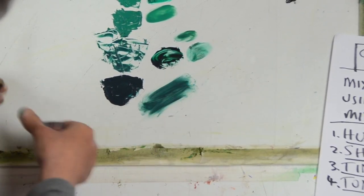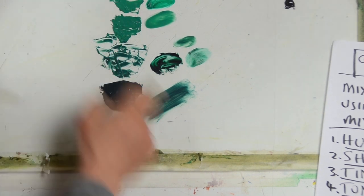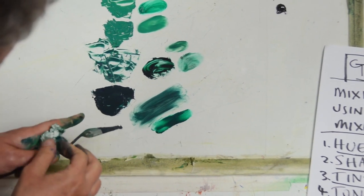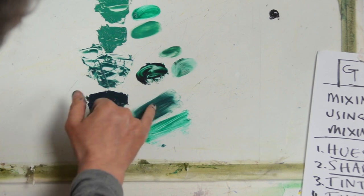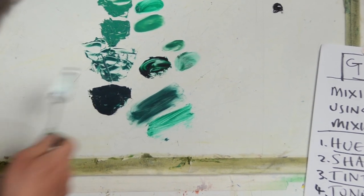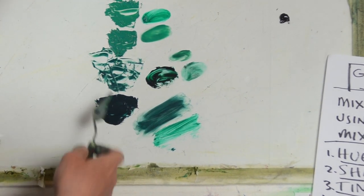You can see the difference in the intensity of the color if we just rub it in there. And you can then go back and put the pure viridian green next to that. You can see the difference, it's really huge. That's a nice subtle version of that using ultramarine blue and permanent green.